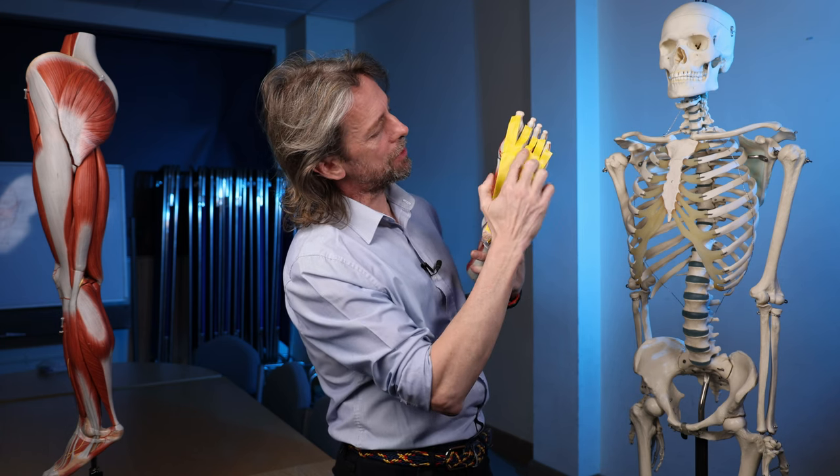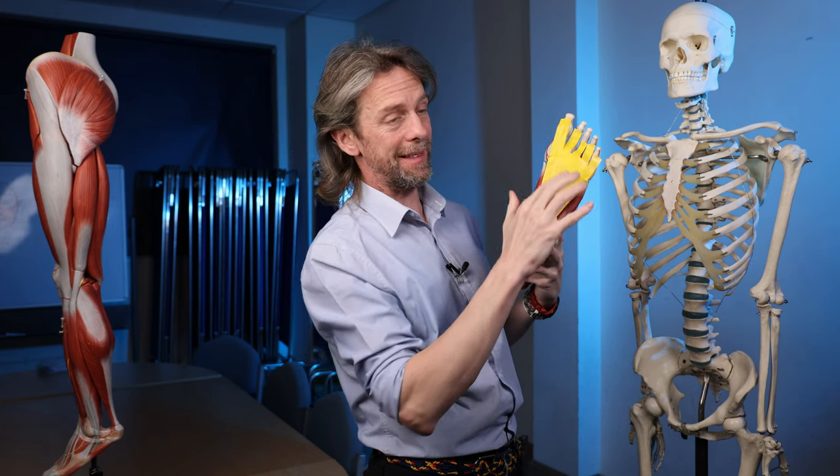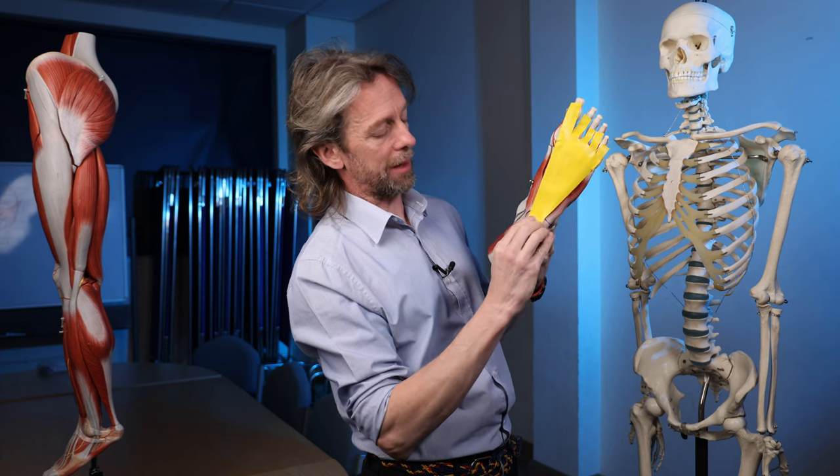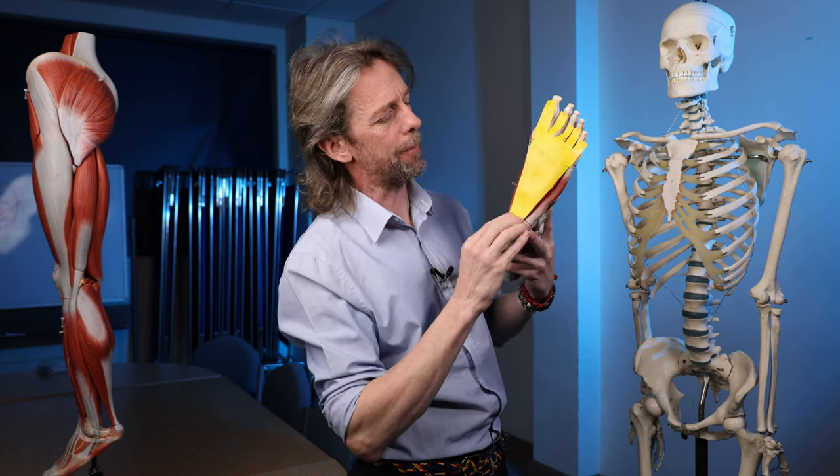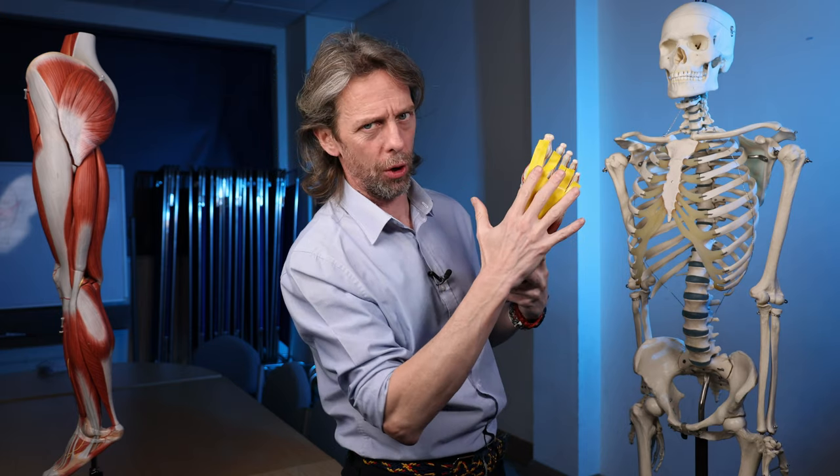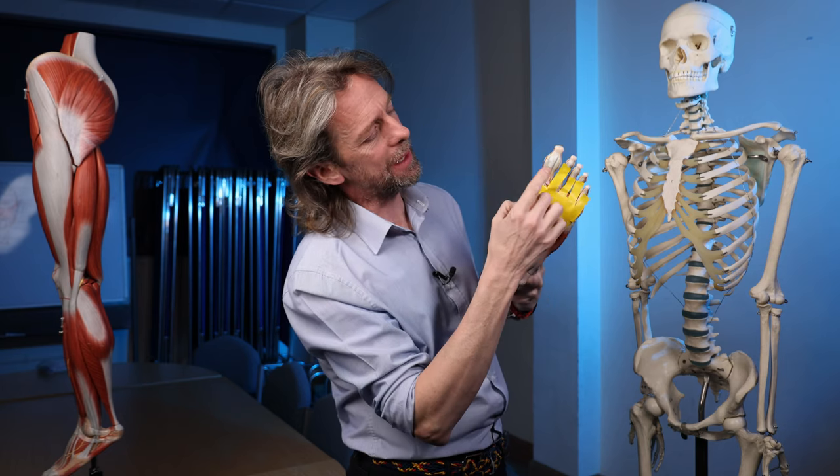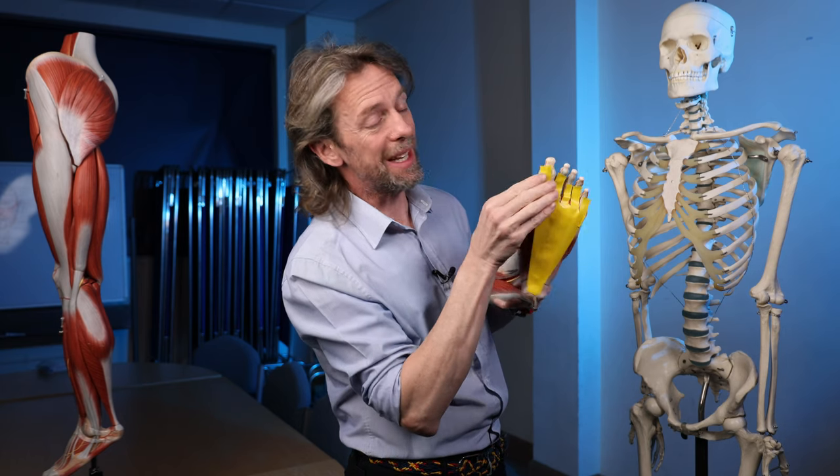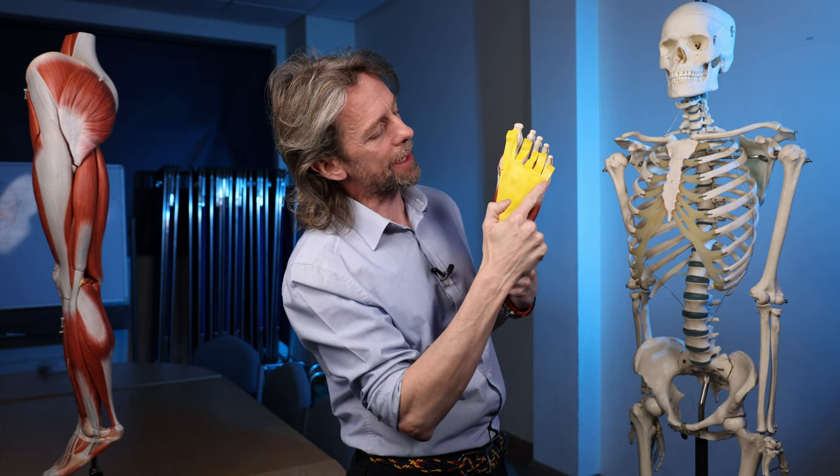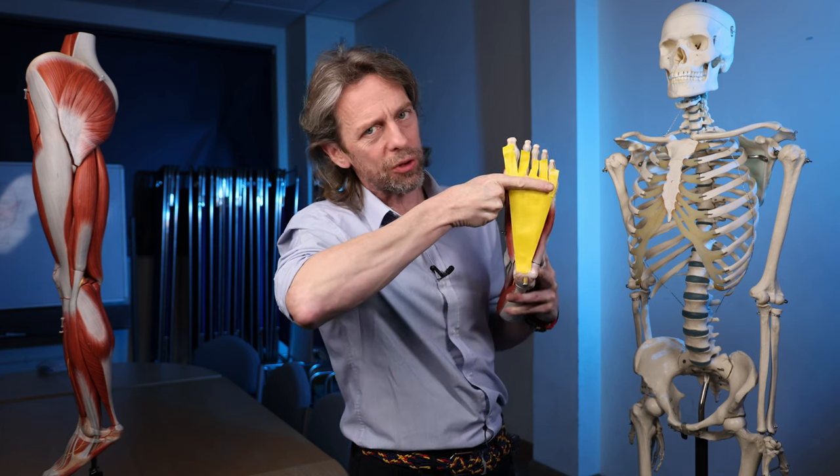It runs to the toes and in fact it splits into superficial parts and deeper parts. So this plantar aponeurosis will run from the calcaneus—I'll show you the bony bit in a minute—but it'll run and insert into the skin of the toes but also to the flexor tendons of the toes, these tendons under here, so it is really really well attached here.